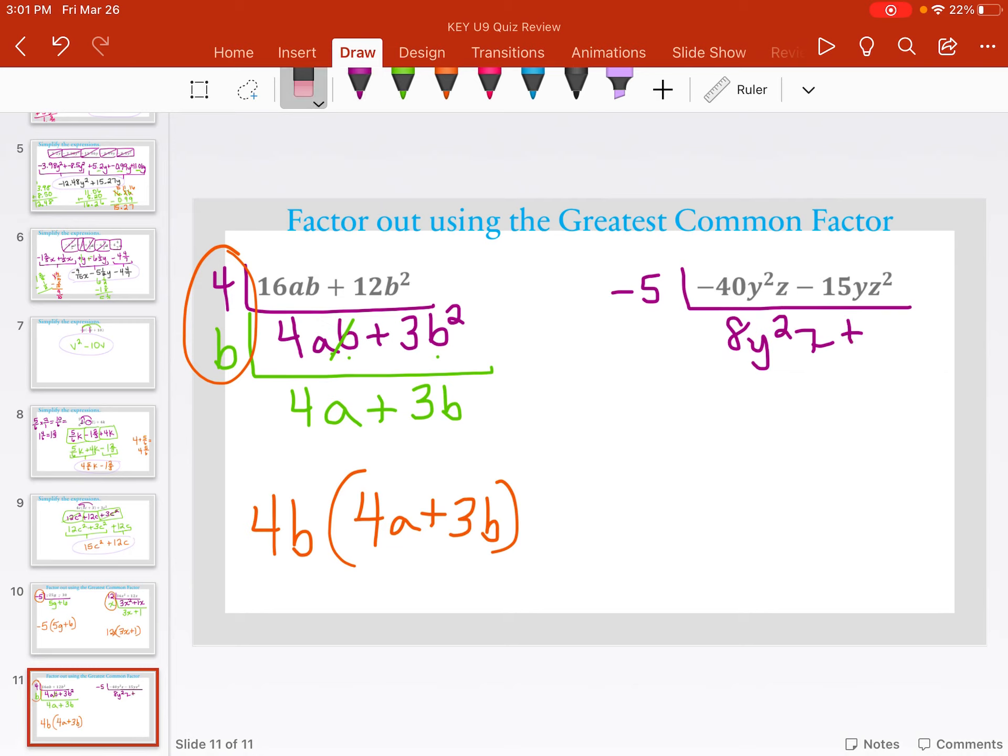negative 15 divided by negative 5 leaves me positive 3yz squared. Okay, next level. 3 and 8, there's nothing else in common. Y squared and y, there's a y in common.